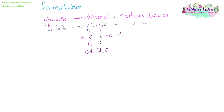We can draw out the structure of ethanol — you can see we have a CH3 group, a CH2 group, and an OH group on the end. The conditions for this are that we need yeast. It is an anaerobic reaction, so without oxygen, in a sealed vessel potentially, at 30 to 40 degrees Celsius.